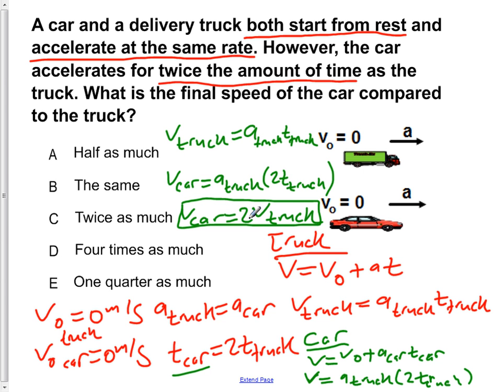Now we just go through our choices and find one that corresponds to this. Because we're asking what is the final speed of the car compared to the truck. So we find C says twice as much. So our answer is C.